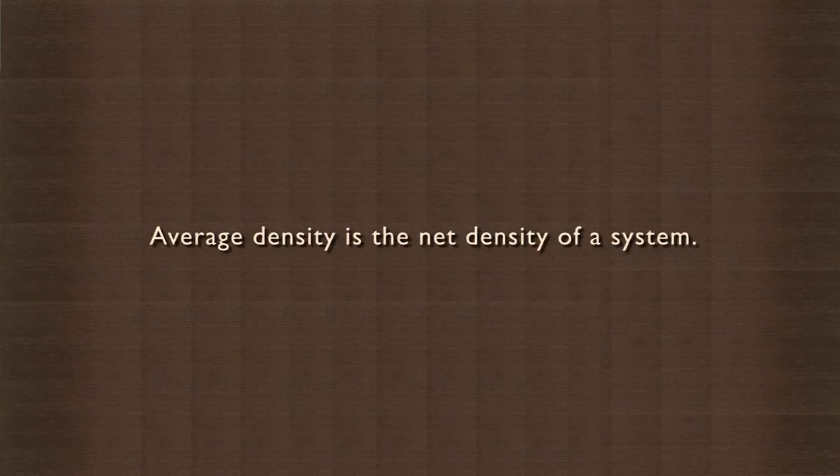Do you know how submarines are made to sink or rise up to the surface? The motion of submarine in vertical direction is adjusted by adjusting the average density in its ballast tubes. Average density is the net density of a system. Let us see the effect of pressure and density.